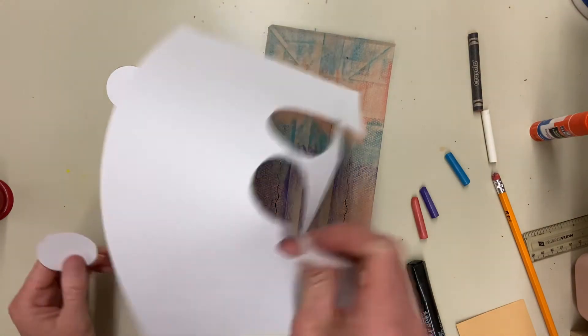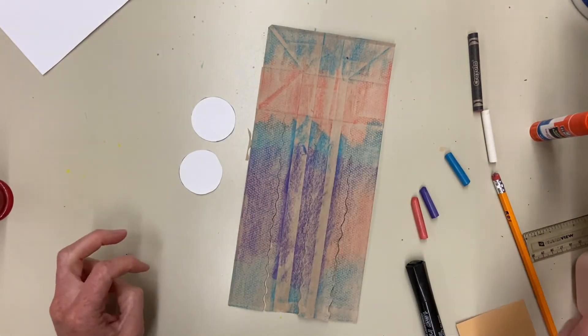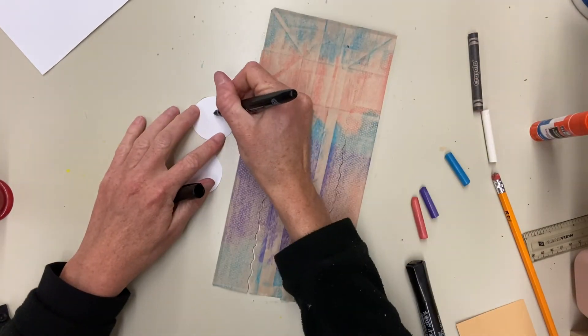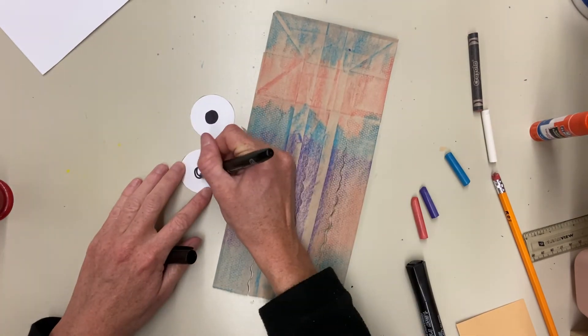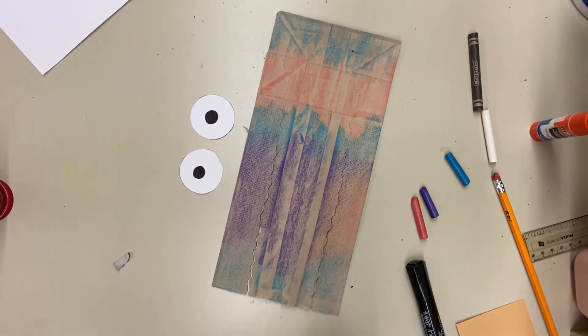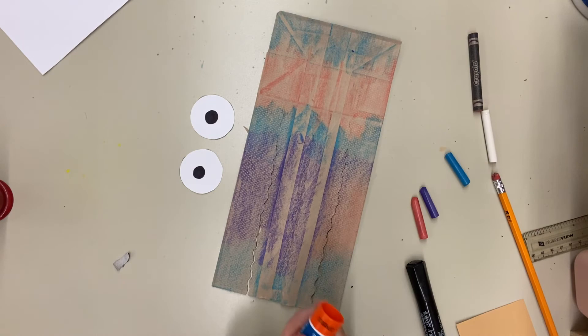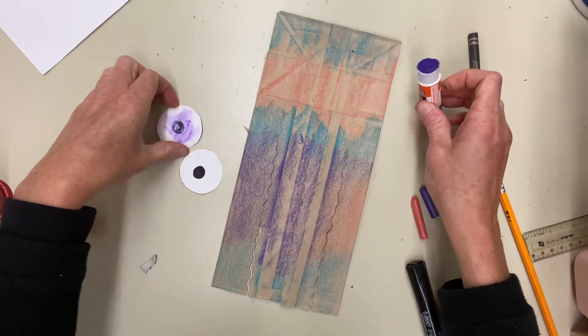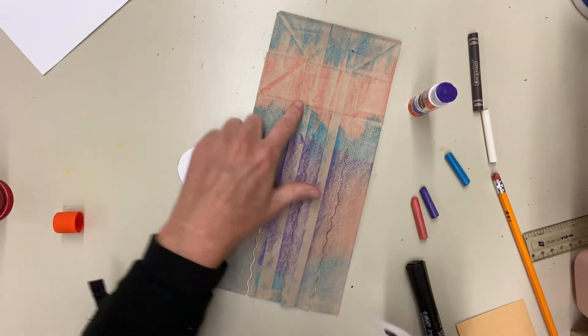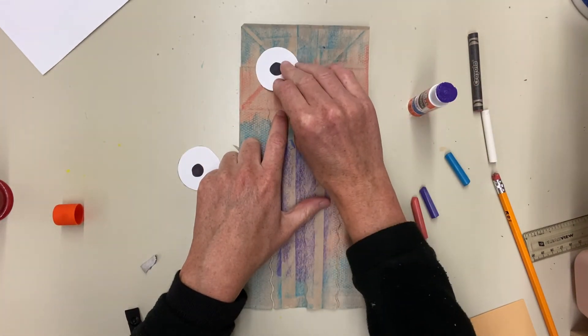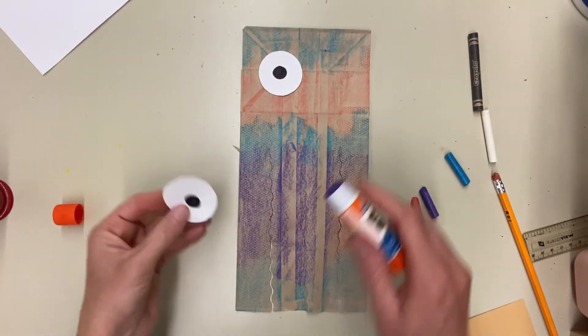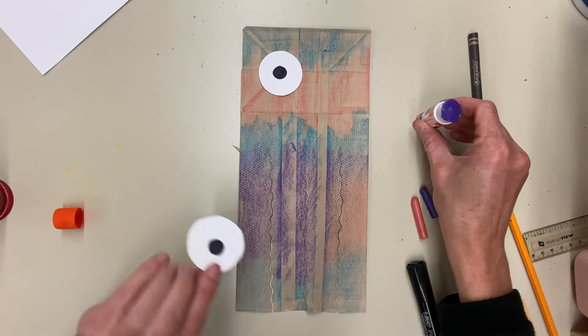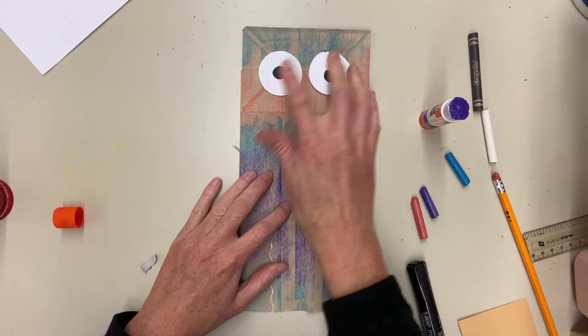All right, and then what I'm going to do is I'm going to use a Sharpie marker or a black crayon and I'm going to color the pupil in the middle of the eye. And then I'm going to use some glue stick and just put some glue stick on the back of each pupil and glue on my eyes. Now remember, this part is the head, the part that's above the line. So I'm going to put one eyeball here and one eyeball here.